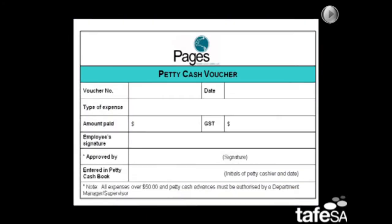Once Kathleen is happy that she can pay Akram's claim, she will fill in a petty cash voucher. Here is a typical petty cash voucher. Notice that each voucher must have a number. The date, the goods, the price and GST are also recorded here.